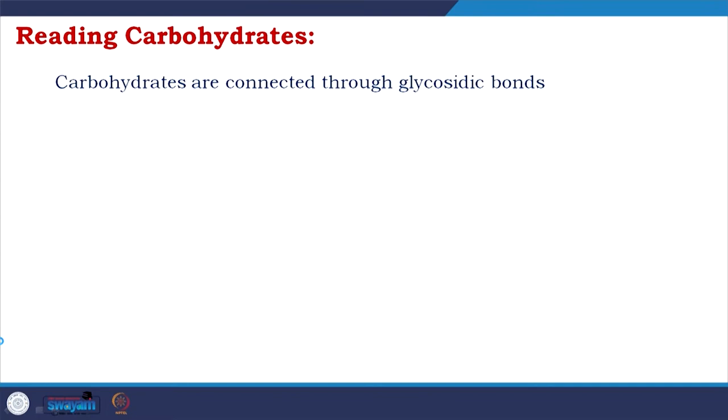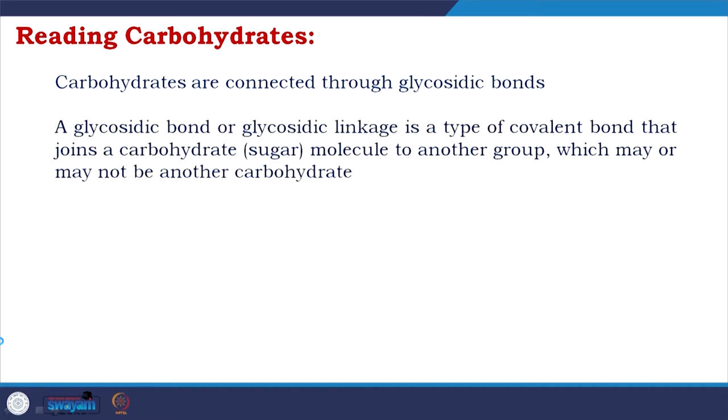Let us start with reading carbohydrates. Carbohydrates are considered a very important molecule — look at food sources and you will find the most accessible sources are very rich in carbohydrate. As discussed in the previous class, carbohydrates are connected through glycosidic bonds. A glycosidic bond or glycosidic linkage is a type of covalent bond that joins a carbohydrate molecule to another molecule — it might be carbohydrate or it might be others.